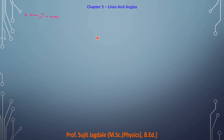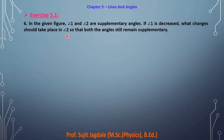Today we are going to consider chapter five, Lines and Angles — the remaining questions from Exercise 5.1. We already covered up to question number five; that link has been shared. Now we are going to start from question number six. The concepts we will use are: complementary angles, supplementary angles, adjacent angles, linear pairs, and vertically opposite angles.